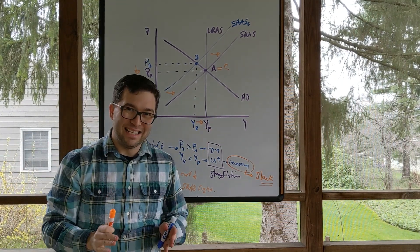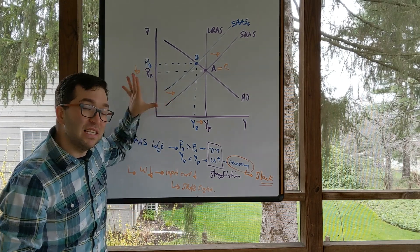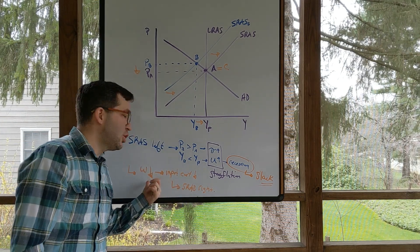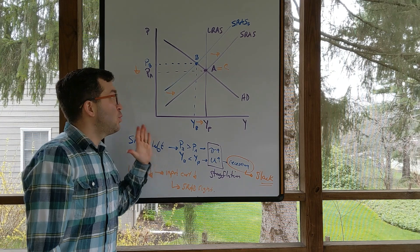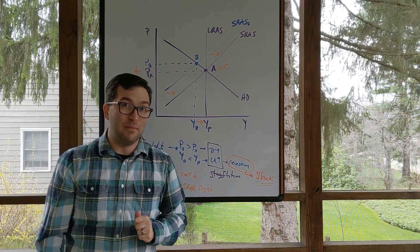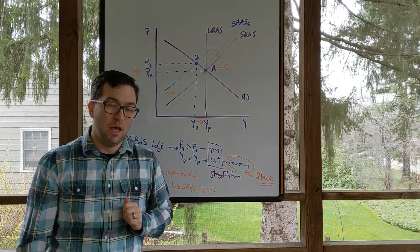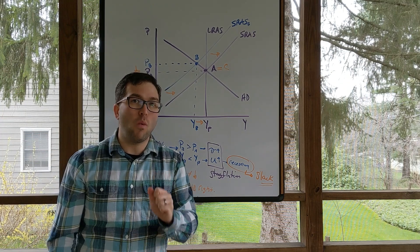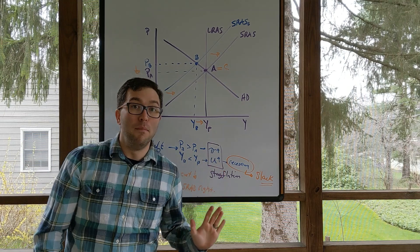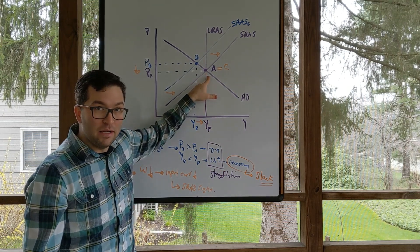I need to stress this. The adjustment process in the aggregate demand, aggregate supply model always comes through the change in wages, which will always shift short-run aggregate supply. It does not matter if aggregate demand is the initial move, or if aggregate supply is the initial move. The adjustment process always comes through wages adjusting and short-run aggregate supply moving back to meet aggregate demand and long-run aggregate supply.